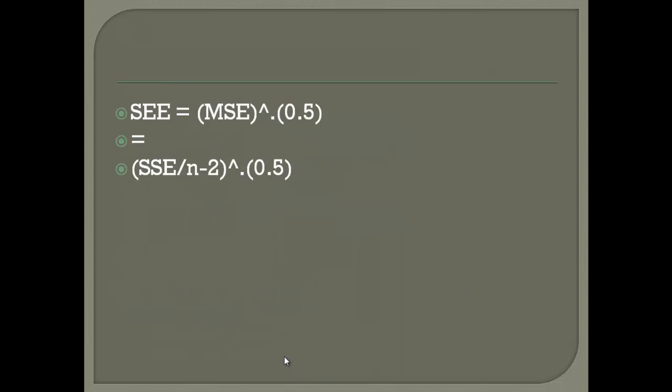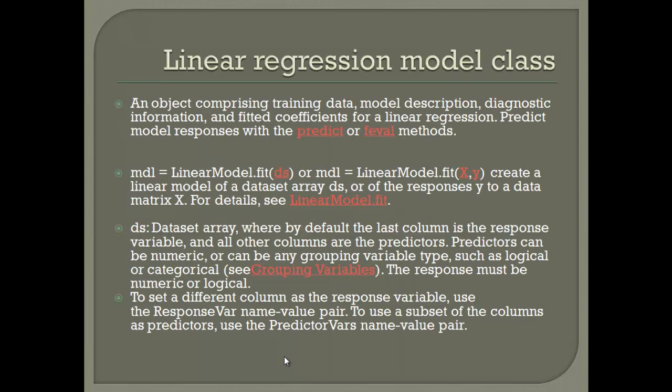I think I forgot to mention here what is mdl. So mdl is the linear model fit, and this forms an input to the ANOVA function. So we can calculate an mdl as linear model dot fit x and y, which creates a linear model of database arrays, which is the ds, or the response of y to a data matrix. ds is the desired array where the default of the last column is the response variable and all the columns are predictors. Predictors can be numeric or any grouping such as logical or categorical. The response must be numerical or logical. So we use the linear model dot fit function with x and y, the two variables that we are looking for.